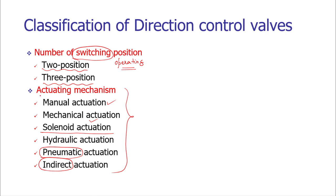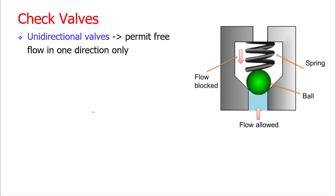Now let us study the first valve: the check valve. Check valves are unidirectional valves — they permit flow in only one direction. A typical check valve construction shows the valve body with a passage. Fluid enters at one opening and exits at another. Inside the valve, a space is machined or cast to house the construction elements. The basic construction element of a check valve is a spring — it is a spring-loaded ball valve using a ball to control the direction of fluid.